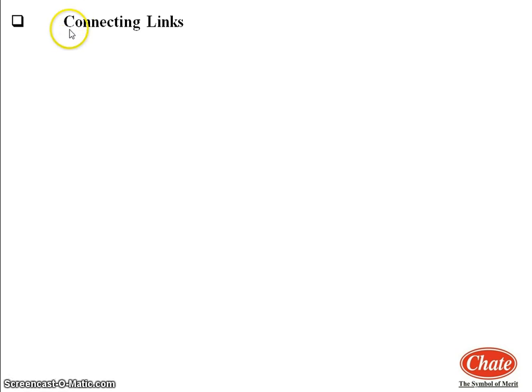First we will see the definition of connecting links. Some plants and animals show some morphological characters by which they can be related to two different groups. Hence they are called connecting links.